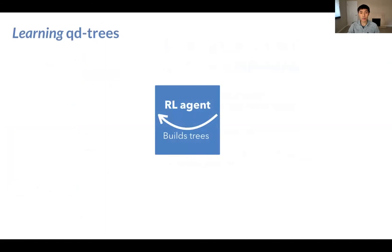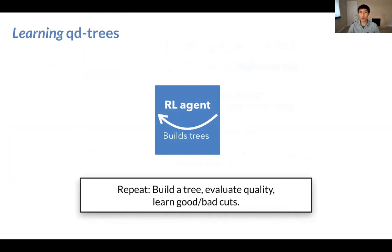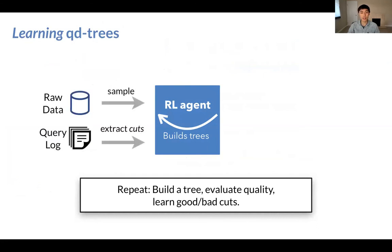So at the core of the learning pipeline is an RL agent that learns to build trees by trial and error. It repeats this process of building a tree, evaluates its quality, and updates its internal model. And through this trial and error process and experience gathering, the agent is going to learn what cuts are good and what cuts are bad. The agent takes as input a raw data sample as well as the query log. The purpose of the query log is that it provides a set of candidate cuts the agent can make. So after a fixed amount of training or after a timeout is reached, the agent will output the best QD-tree found so far.